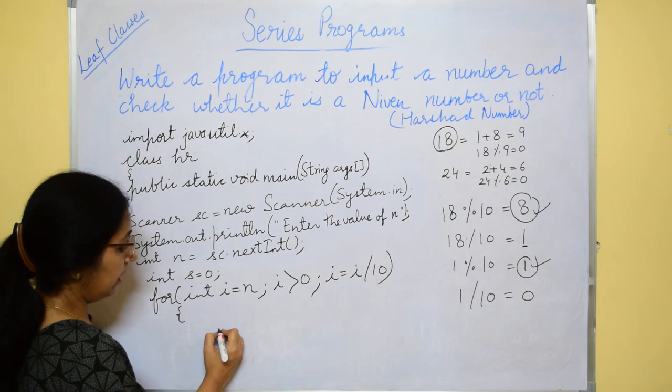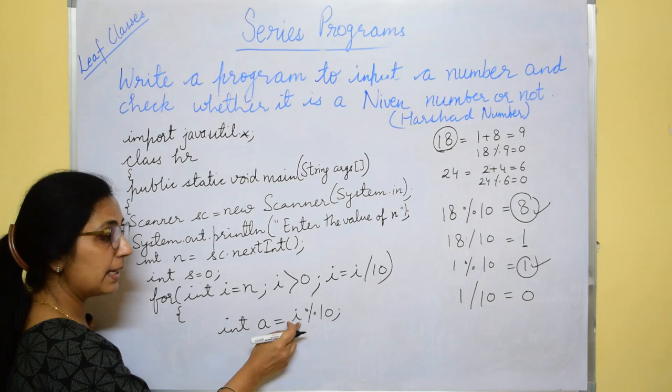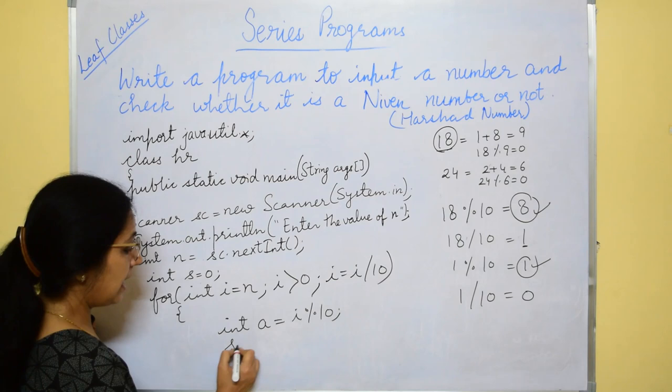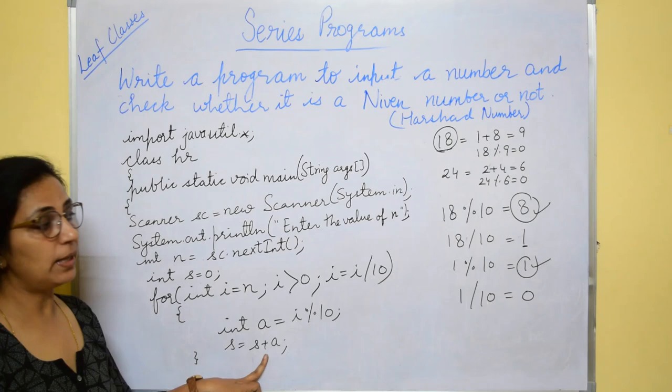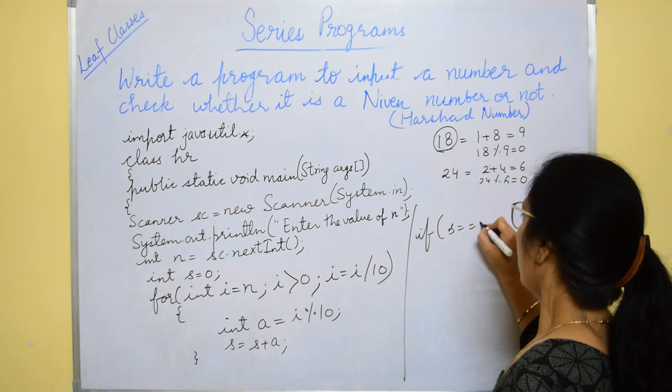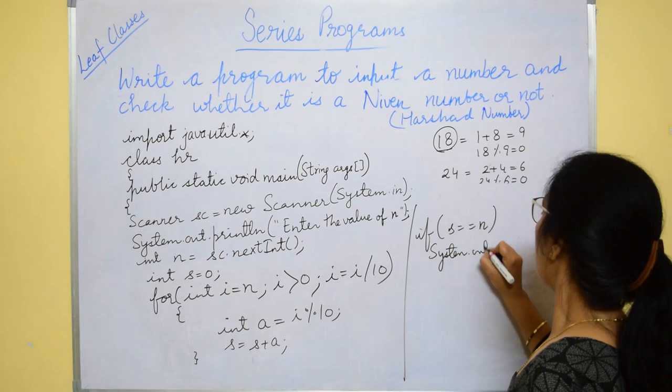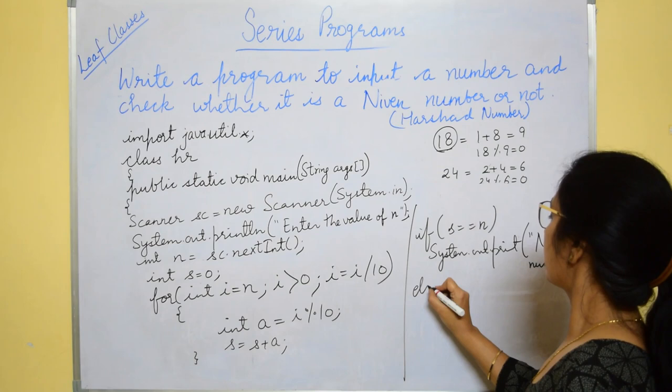Then, to find the remainder, you say inti equals to i mod 10. Then, this is how you are extracting digit by digit from the number and S equals to S plus A. After completion of this loop in S, you will have the total sum of the digits of the number. After that, you will check if S is equals to N, you will print, it is a Neven number, else print not a Neven number.